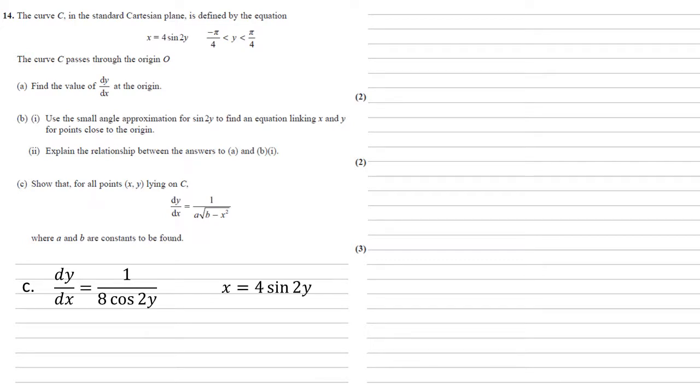We know from the question that x equals 4 sine 2y. Looking at the format that we're being asked to find this in, we've got a square root of b minus x squared. And we've got cos and sine in what we've got already, which suggests we're going to use our sine squared plus cos squared equals 1 identity. Note that I put the 2y's in there, because that's what we're dealing with already.